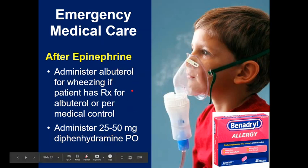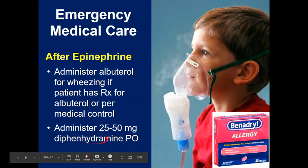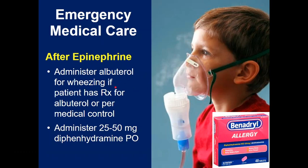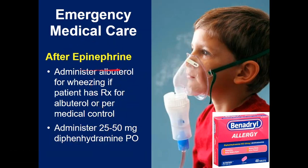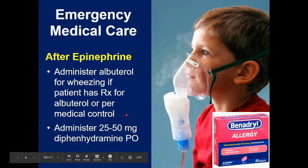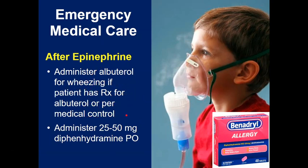If it's anaphylaxis, give epi first. If it's a simple allergic reaction with just itchy urticaria, give diphenhydramine. If they're wheezing and have a prescription, consider albuterol. If they don't have a prescription but are itchy and wheezing, that could be anaphylaxis and you may need to give an EpiPen. Look for multi-system involvement. For albuterol, you can call medical control if they don't have a prescription.